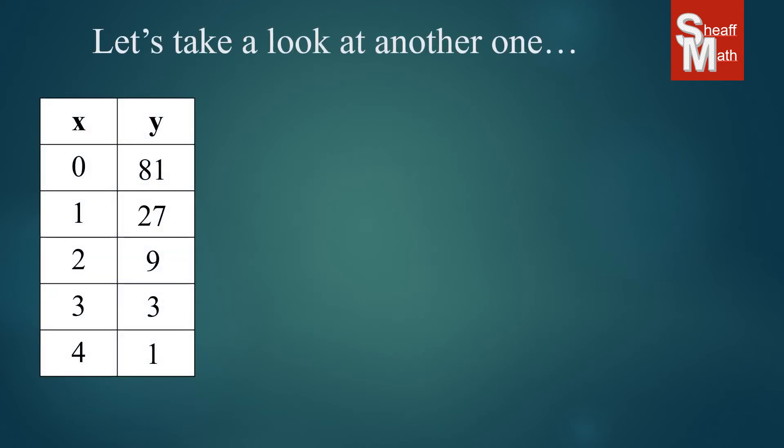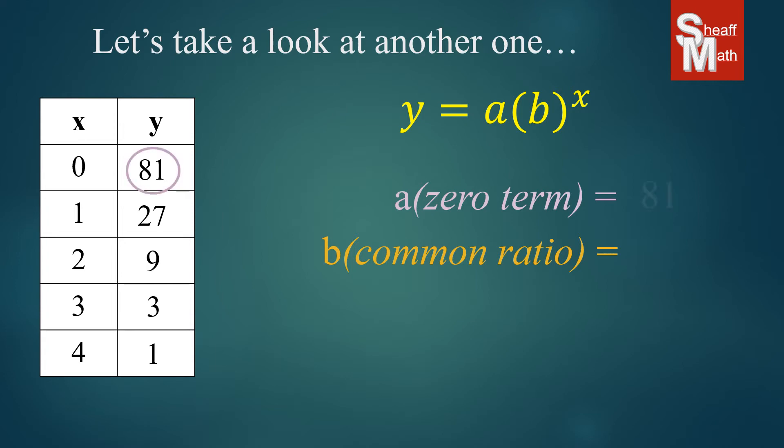Now this table is a little bit different. We still want to find our zero term and ratio as usual. Our zero term is very easy to find. It's 81. But these numbers seem to be going down.